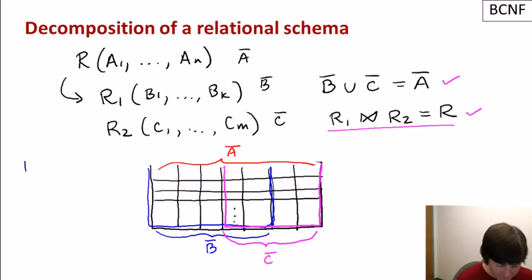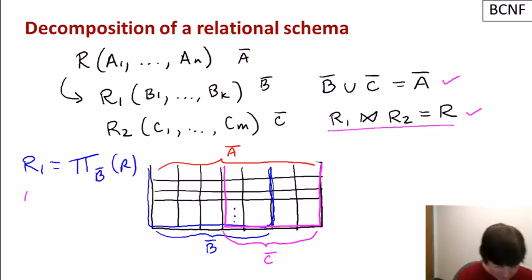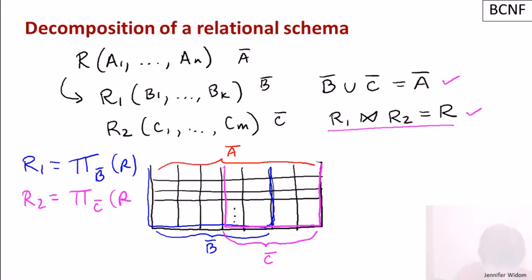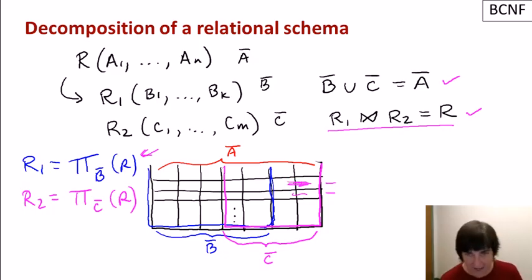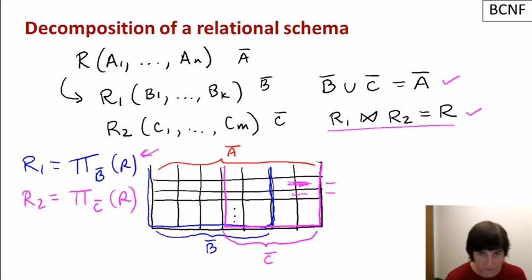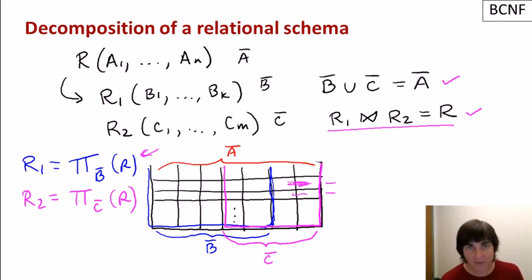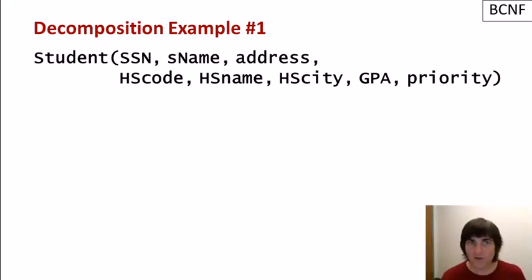R1 can be defined as the projection on the B attributes of R, and R2 is the projection on the C attributes of R. When we do the projection, duplicates present simply because of different values in remaining attributes don't need to be retained. We saw in earlier examples that redundancy came from capturing information multiple times. Boyce-Codd normal form separates the relation so that each piece of information is captured exactly once. Let's look at two possible decompositions of the student relation.